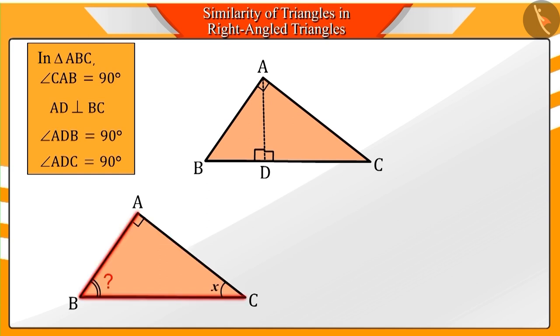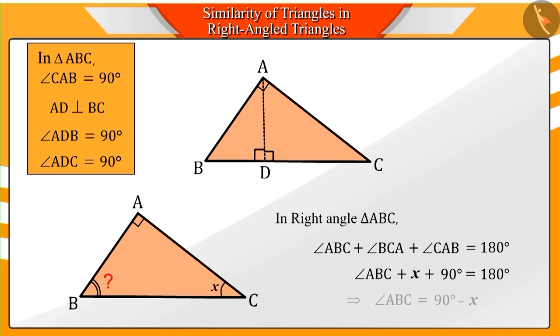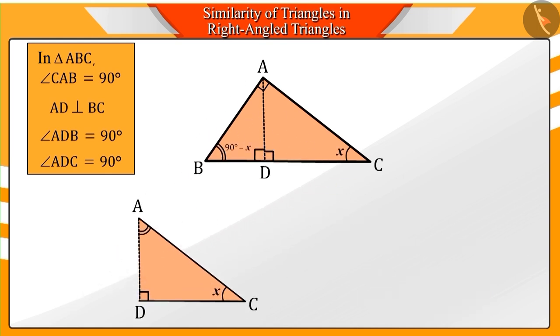can you tell me what angle ABC will measure? You must remember that the sum of the measurement of all the angles of a triangle is 180 degrees. Therefore, the measure of angle ABC will be 90 minus X.